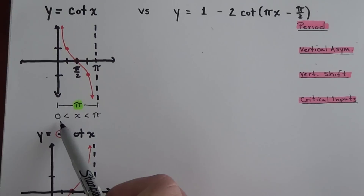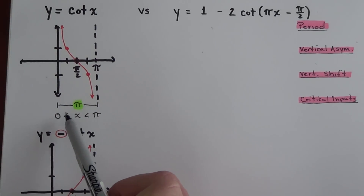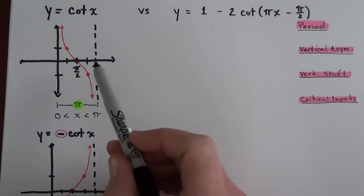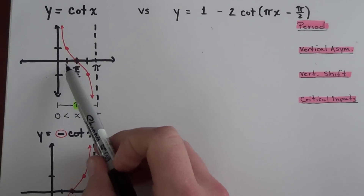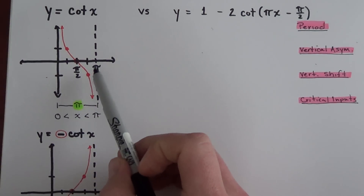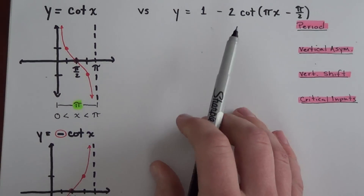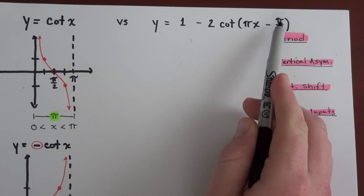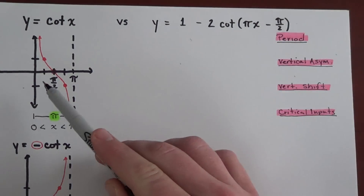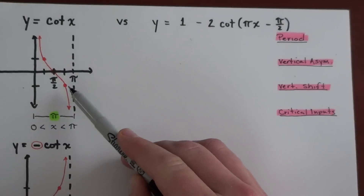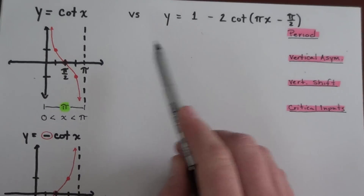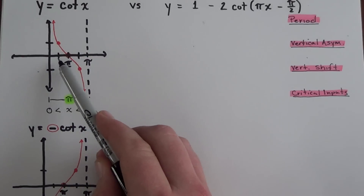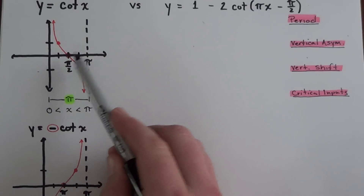The original domain of the cotangent function is a length of pi going from zero to pi. When I alter the inputs, I'm looking for the x value that, when plugged in, simplifies to pi over four, pi over two, and three pi over four. I call these the inner critical value input steps or interval steps.